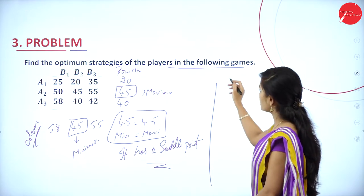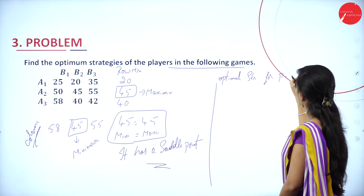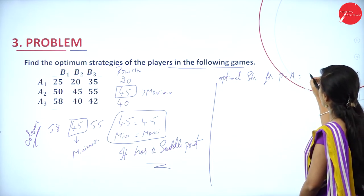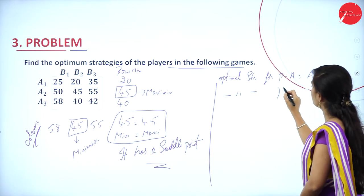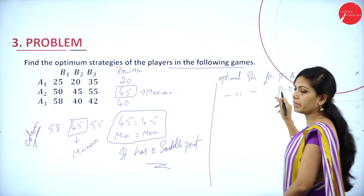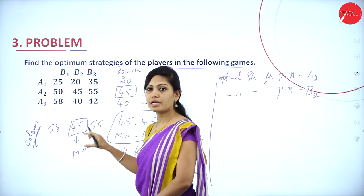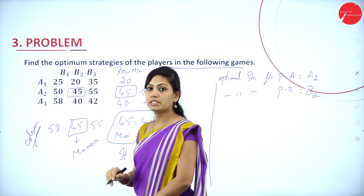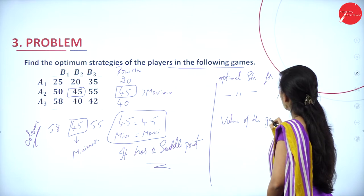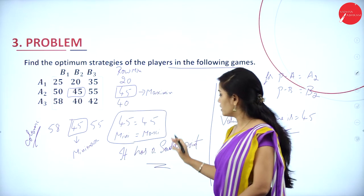Value of the game: the optimal strategy for player A is A2 (45 comes under row A2), and optimal strategy for player B is B2 (45 comes under column B2). The maximin and minimax values come under one intersected point, so the value of the game is 45.